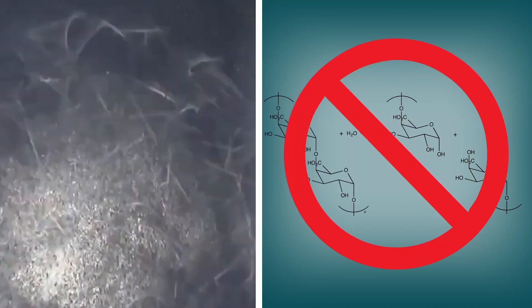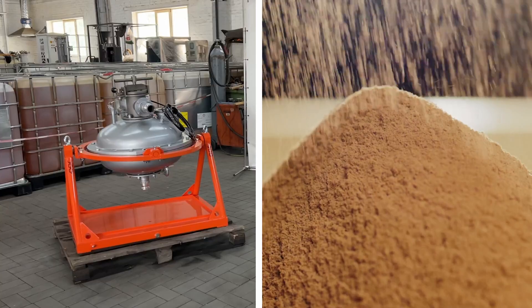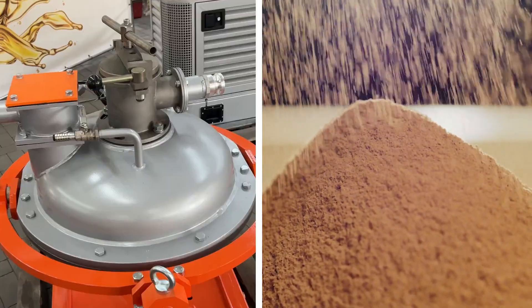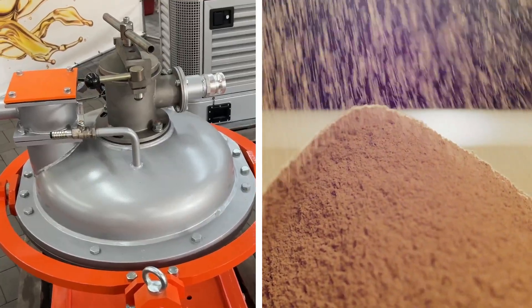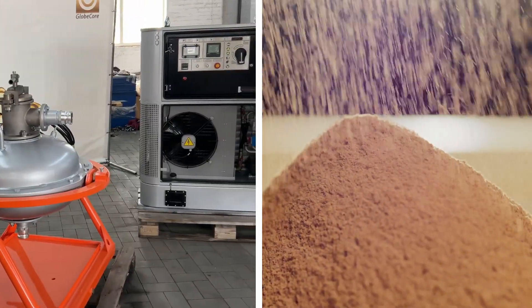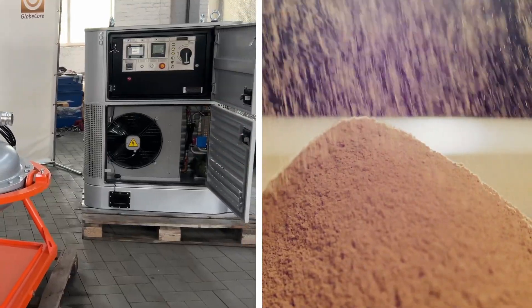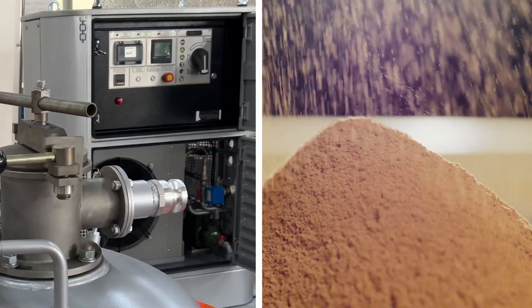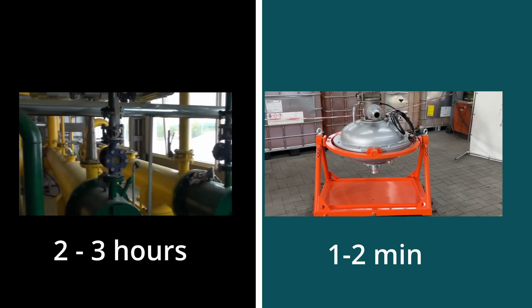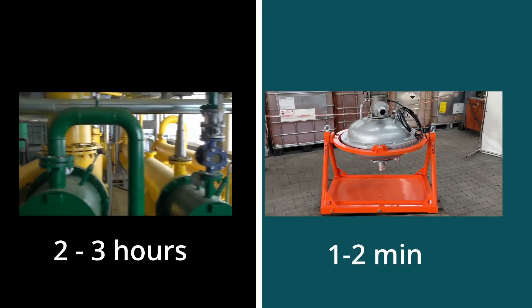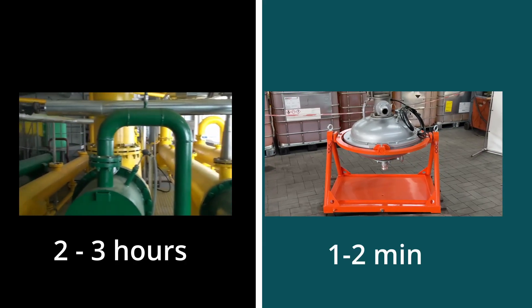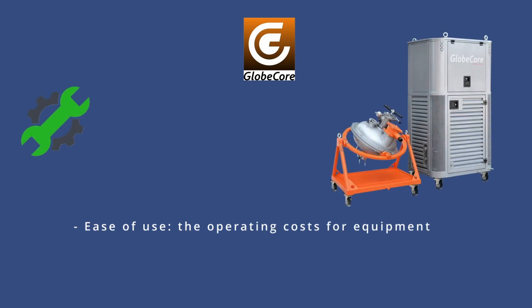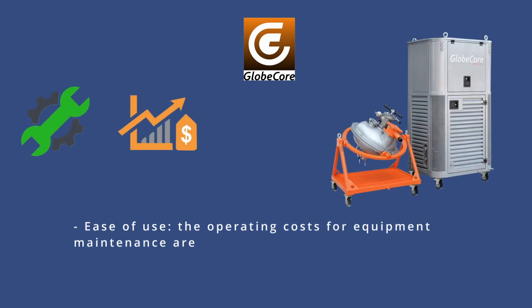The technological process using AVS allows for faster and less time-consuming pectin production — it takes just a few minutes rather than several hours. The advantages of GlobeCore technology include ease of use, and operating costs for equipment maintenance are lower compared to conventional mills and reactors.